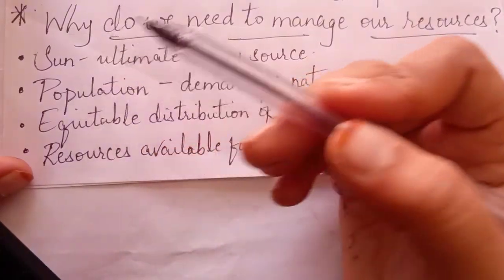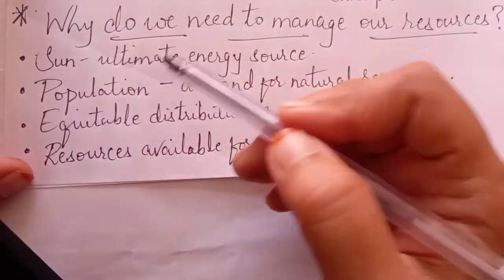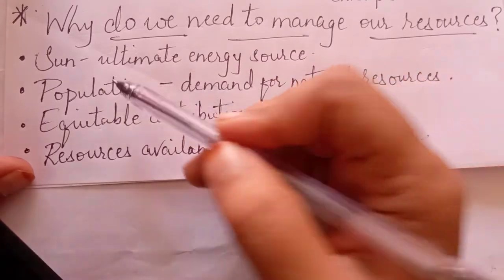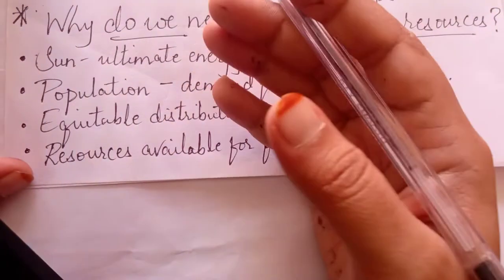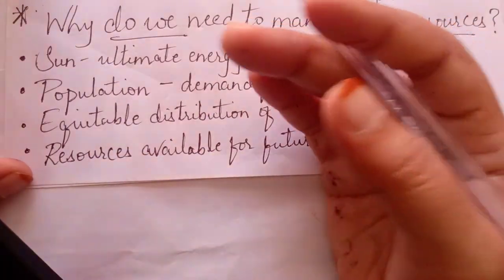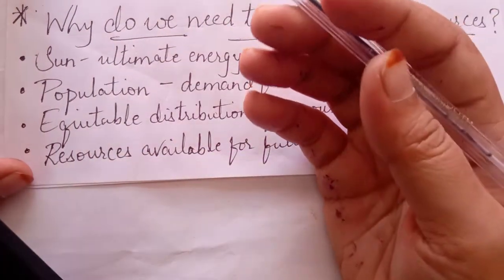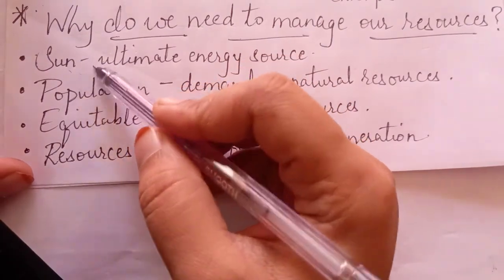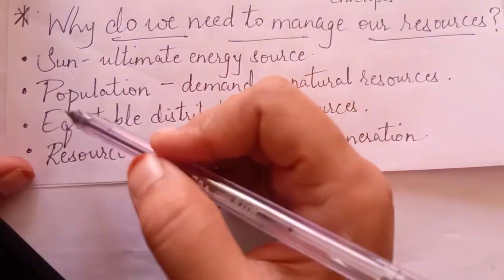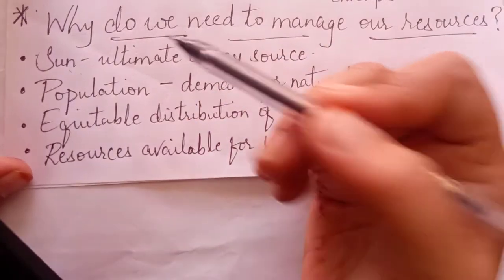That means the formation of those resources, their availability, is all dependent upon Sun only. And if we use them continuously, if we keep on exploiting those resources in an uncontrolled manner, then even if Sun is present, those resources will not be available to us.